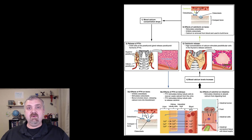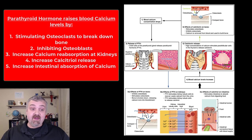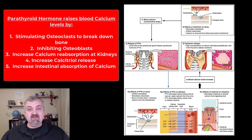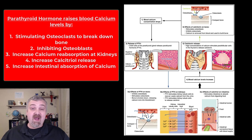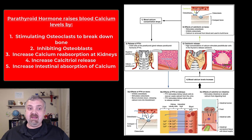We just finished talking about the thyroid gland and how it produces a hormone called calcitonin that's important if your blood calcium levels get too high. Parathyroid hormone is much more important — at least much more powerful — and its job is to kick in when blood calcium levels drop and get too low.